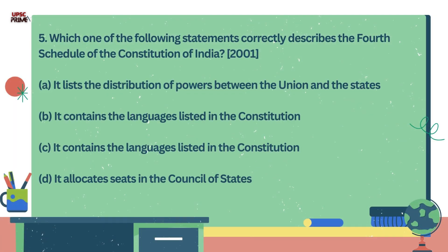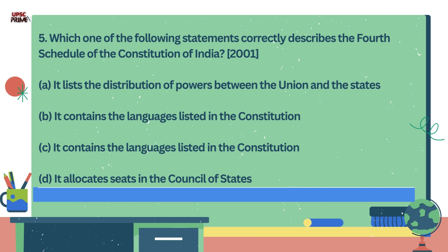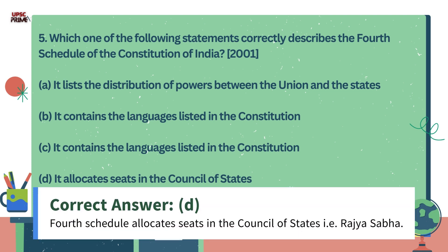Question number 5. Which one of the following statements correctly describes the Fourth Schedule of the Indian Constitution? A. It lists the distribution of powers between the Union and States. B. It contains the languages listed in the Constitution. C. It contains the languages listed in the Constitution. D. It allocates seats in the Council of States. The correct answer is Option D. The Fourth Schedule of the Indian Constitution allocates seats in the Council of States, that is Rajya Sabha.